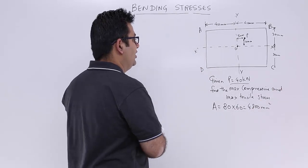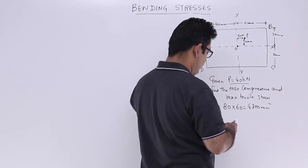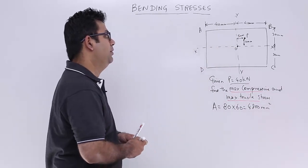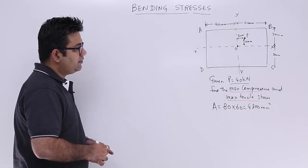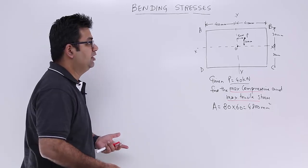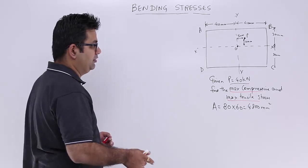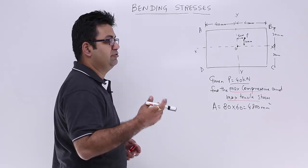We need to find out the maximum compressive and the maximum tensile stresses produced in the body. Because it is eccentric, we need to find out a combination of the direct and the bending stresses. So let's find out the bending stresses first.